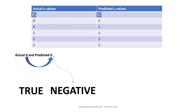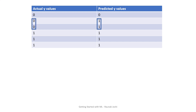Moving on. Let's consider the case where actual is 0 and predicted is 1. These don't match, so it's false — that's the first thumb rule. Now checking the second thumb rule: we have 1 in the predicted section, so it is positive. Therefore, this is false positive.